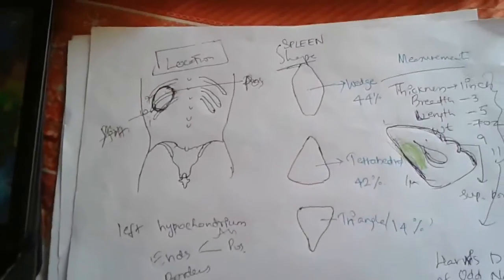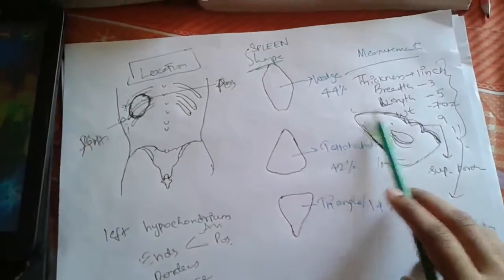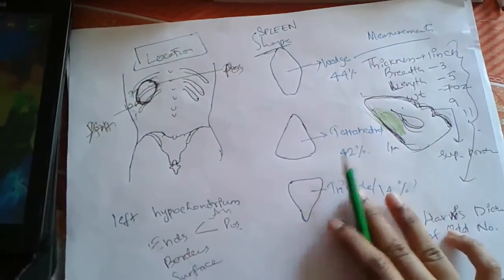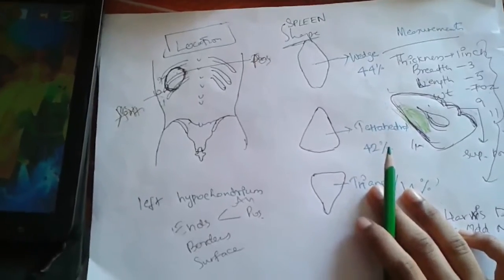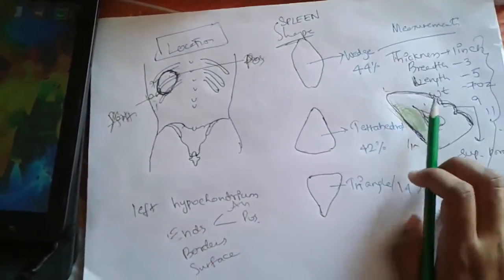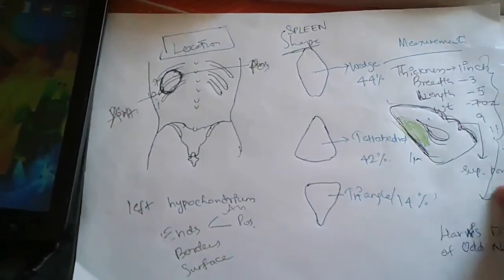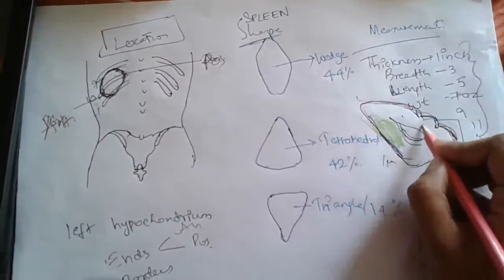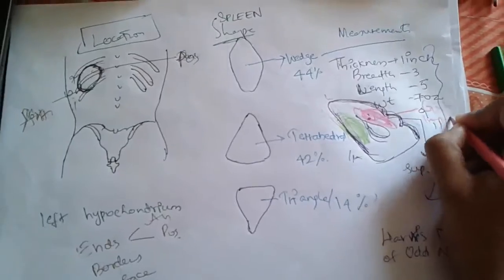Continuing from the previous video where I stopped after differentiating the diaphragmatic surface and the visceral surface, let us now see the relations of the visceral surface. The gastric impression is formed by the fundus of the stomach. It is the largest impression and it lies between the superior and the intermediate borders. This is the gastric impression.